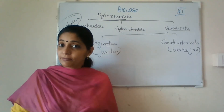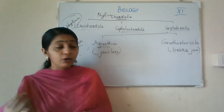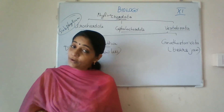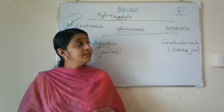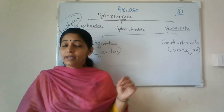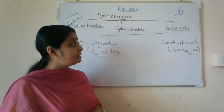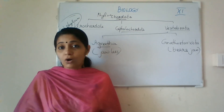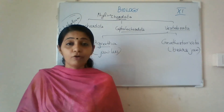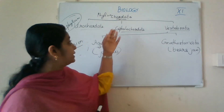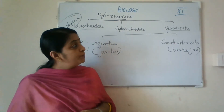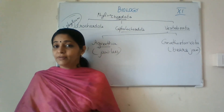Subphylum Vertebrata: the organisms have a notochord present in the embryonic stage. Later on, when it becomes adult, it may change into a cartilaginous or bony vertebral column. All vertebrates are chordates, but all chordates are not vertebrates, because Urochordata and Cephalochordata are also chordates. Now we will see some of the main features of subphylum Vertebrata.